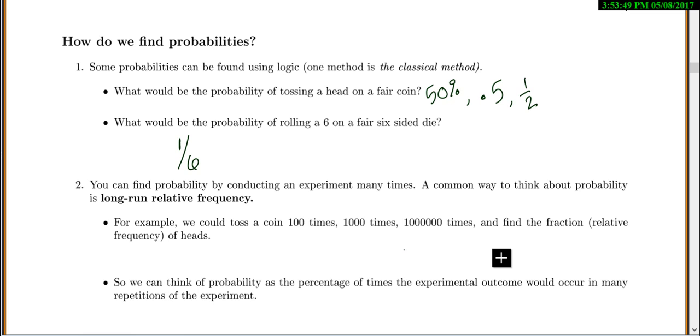You could find the probability by conducting an experiment many times. A common way to think about probability is long-run frequency. For example, we could toss a coin 100 times, 1,000 times, 100,000 times, and find the fraction or relative frequency of heads. We can think of the probability as the percentage of times our outcome would occur in many repetitions of the experiment.